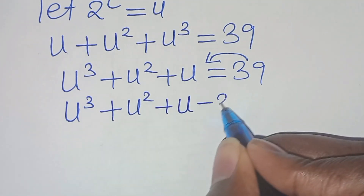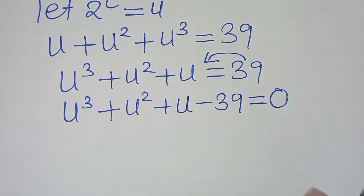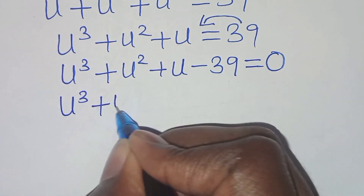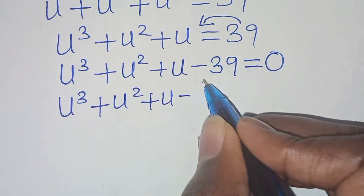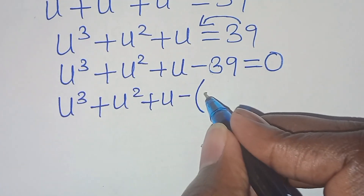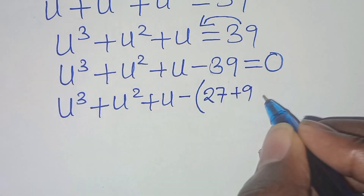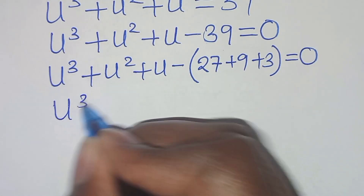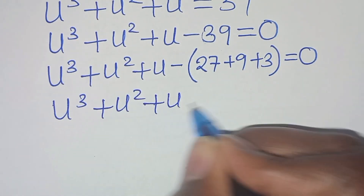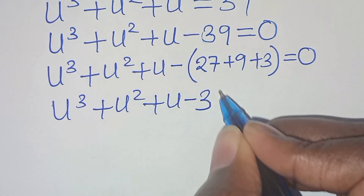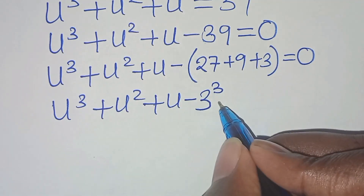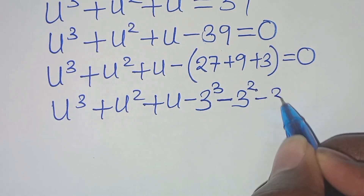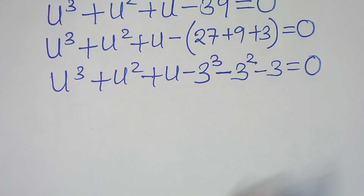Taking 39 to the left-hand side, we have u cubed plus u squared plus u minus 39, equal to 0. We can express 39 as 27 plus 9 plus 3. So we have u cubed plus u squared plus u minus 27 minus 9 minus 3, equal to 0. This gives us u cubed minus 3 cubed, plus u squared minus 3 squared, plus u minus 3, equal to 0.